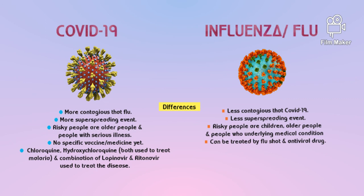However, three medicines — chloroquine, hydroxychloroquine, and the combination of lopinavir and ritonavir — were given to patients infected with COVID-19 since the pandemic started. Chloroquine and hydroxychloroquine are medicines used to treat malaria and have anti-inflammatory properties. Influenza can be treated by giving a flu shot or antiviral drugs that can make the illness milder.